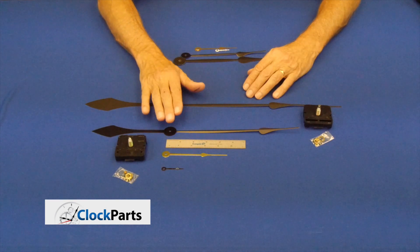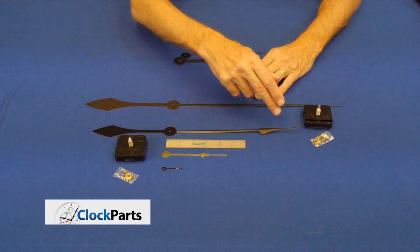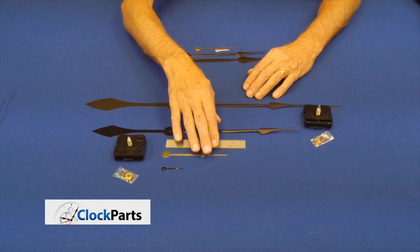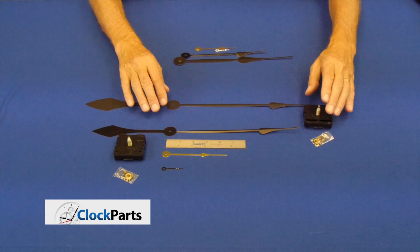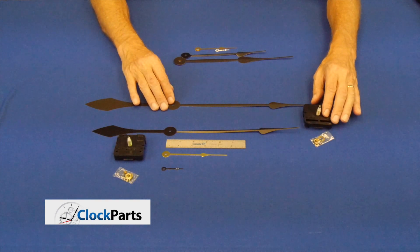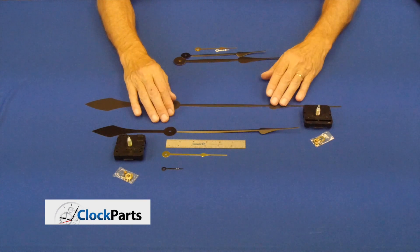In summary, the way you measure a minute hand is from the mounting hole to the tip. You get a regular mini quartz if it's five inches or less, and you're getting free hands. If it's high torque, this will run hands up to 18 inches, and we have a great selection priced accordingly to the length you want.